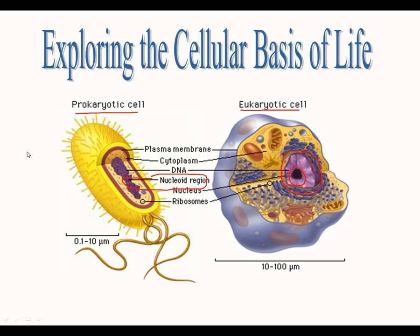Your prokaryotic cells are usually the single-celled organism, and your eukaryotic cells are going to be usually your multicellular organisms that are working together to carry out multiple functions. You can see the size differences — your prokaryotes are typically smaller compared to your eukaryotic cells. If you think about the compound light microscope we have used in class, it probably did not have enough magnification to look at prokaryotic cells because they're so much smaller. You are able to see a lot of the eukaryotic cells with our compound microscope just because of their size.